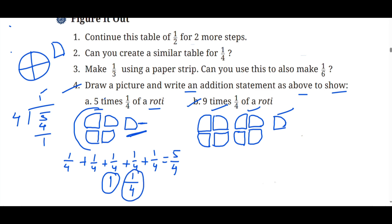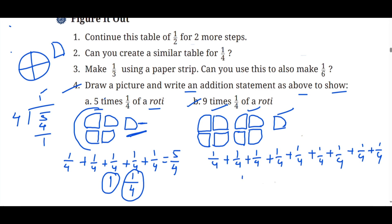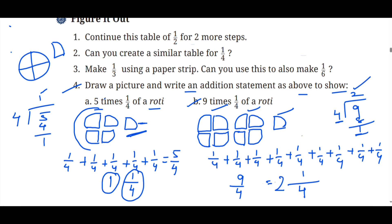The second part is 9 times 1/4. When we add this, we get 9/4. To convert to a mixed fraction: 4 goes into 9 twice (4 times 2 is 8), remainder is 1. So this 1 goes up as the remainder, and 2 comes as the whole number. We have 2 whole units and 1/4 remaining — that is 2 full rotis and 1/4 as the fractional part.